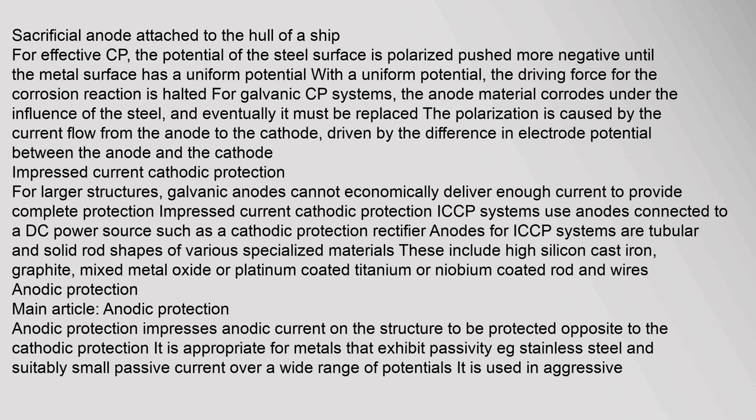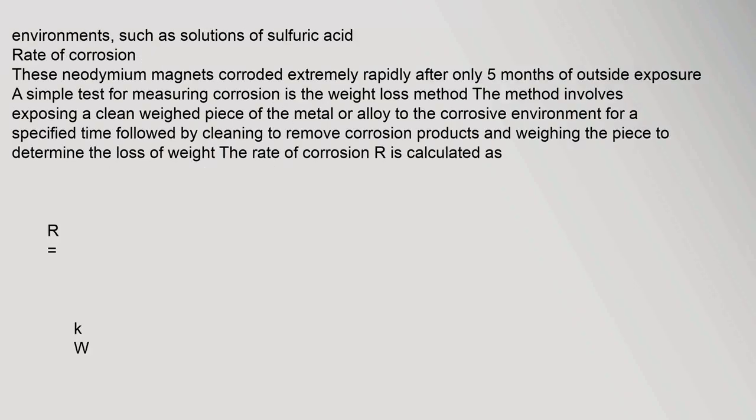Anodic protection — main article. Anodic protection impresses anodic current on the structure to be protected — opposite to cathodic protection. It is appropriate for metals that exhibit passivity, e.g. stainless steel, with a suitably small passive current over a wide range of potentials. It is used in aggressive environments such as solutions of sulfuric acid.